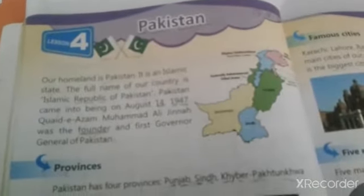Now kids, open page number 11, Lesson 4 — Pakistan. In this lesson we already discussed about our country Pakistan. Our homeland is Pakistan. It is an Islamic Republic country. The full name of our country is Islamic Republic of Pakistan. Pakistan came into being on 14th August 1947. The founder and first governor was Quaid-e-Azam Muhammad Ali Jinnah. There are four provinces of Pakistan: Punjab, Sindh, Khyber Pakhtunkhwa, and Balochistan. Khyber Pakhtunkhwa is also called KPK.